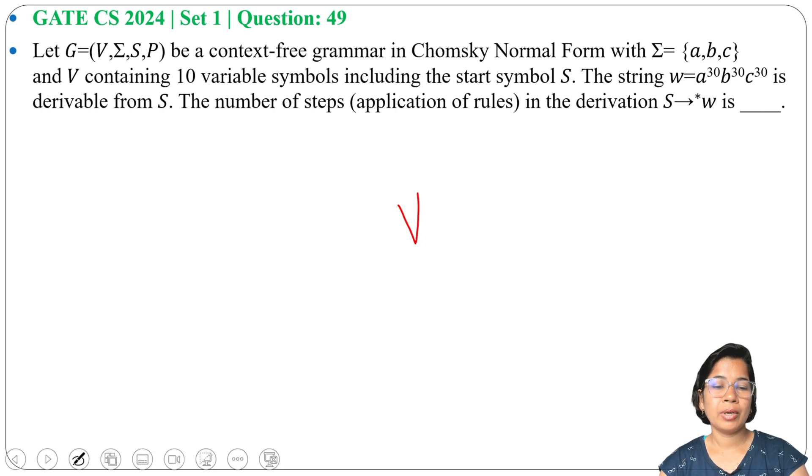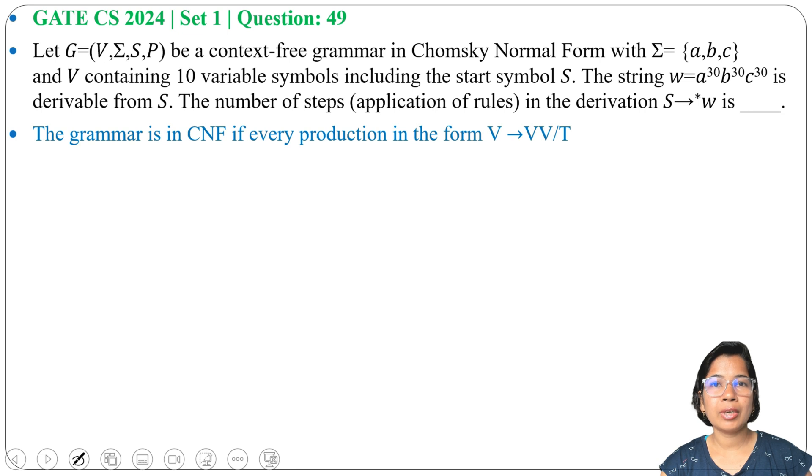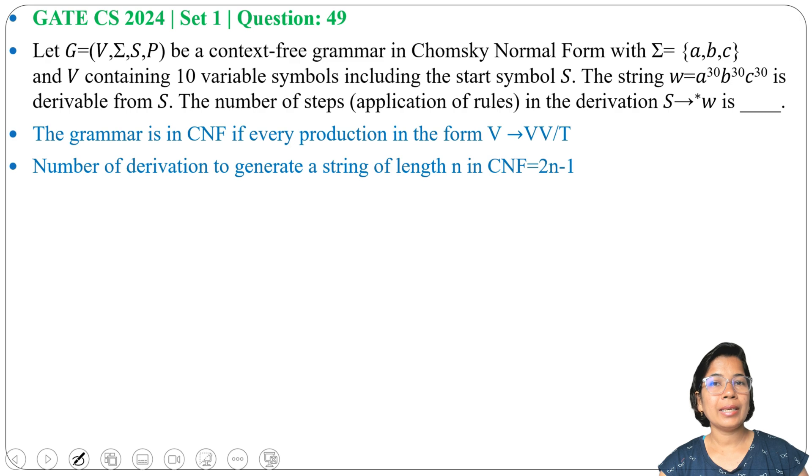In CNF, every grammar is in the form V → VV or V → T, so either there can be two variables or a single terminal. There is a direct formula for number of steps: 2n - 1, where n is the string length.